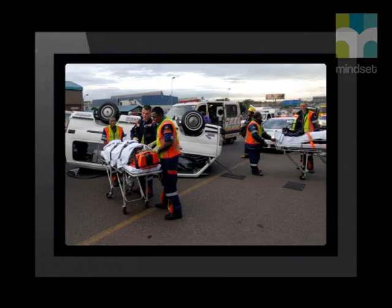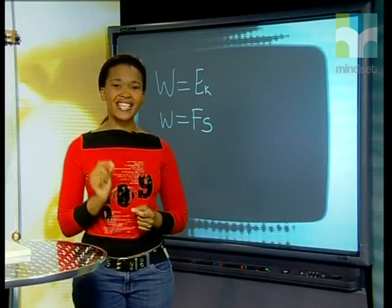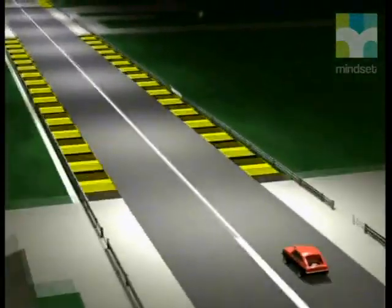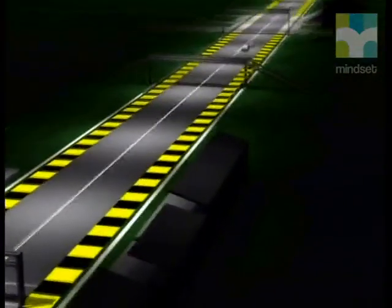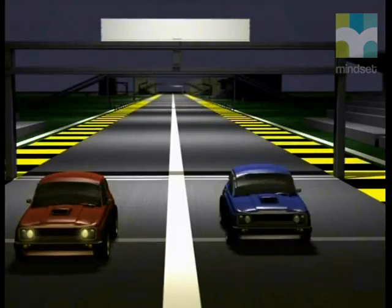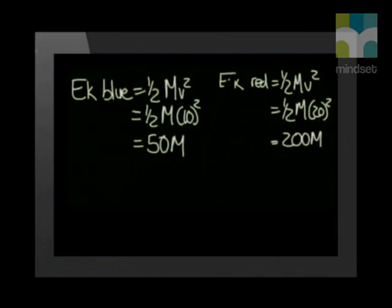It is not just the mass of the object that affects kinetic energy. Thinking of accidents, I'm sure you've heard the expression 'speed kills.' Let's explain this in terms of kinetic energy. Two vehicles have the same mass m. The blue vehicle has a speed of 10 meters per second and the red one has a speed of 20 meters per second. Although the speed of the red car is twice the speed of the blue car, the kinetic energy of the red car is four times the kinetic energy of the blue car — so the red car requires four times the amount of work to stop. Kinetic energy is directly proportional to velocity squared.